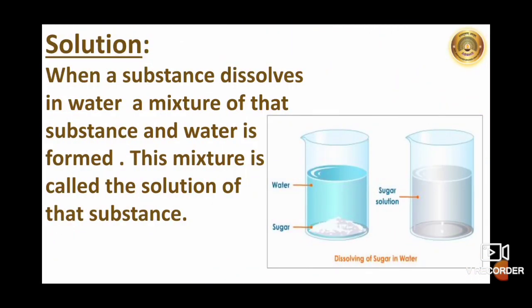Now, we will see what is called a solution. When a substance dissolves in water, a mixture of that substance and water is formed. This mixture is called the solution of that substance. Here in the picture, can you see? When we add sugar to water, it dissolves in water and we get sugar solution.